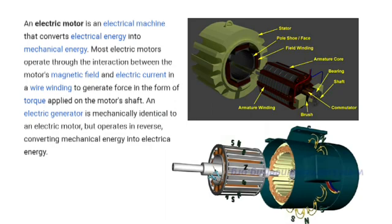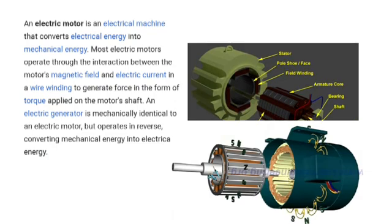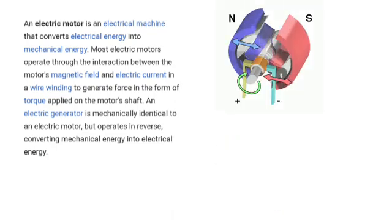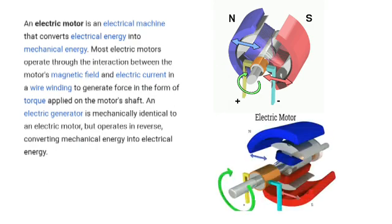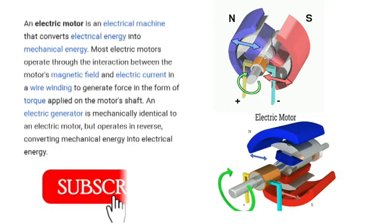Most electrical motors operate through the interaction between the motor's magnetic field and electric current in a wire winding to generate torque applied on the shaft. That's why the motor rotates—the rotor rotates, and the shaft which is connected to the rotor moves around. This is how the motor works.